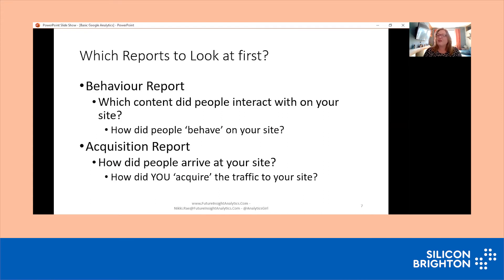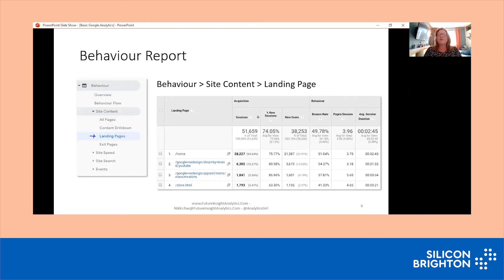Having trained thousands and thousands of people, the main question I get asked is which reports to look at first. People open up Google Analytics, they're astounded by how much information is in there and they really don't know where to start. I would start, especially when training someone, by looking at these two reports: the behaviour report, which tells us which kind of content people interacted with on our site, and then the acquisition report — how did people arrive at your site and how did you acquire that traffic? The key report I'd like you to look at is the behaviour report, found on the left-hand side by clicking behaviour, site content, landing pages.